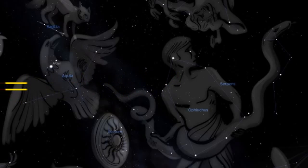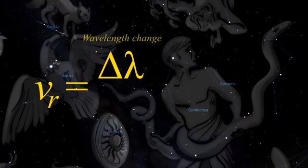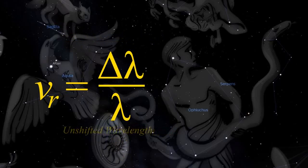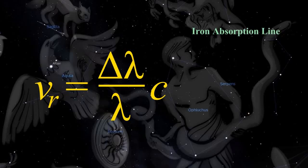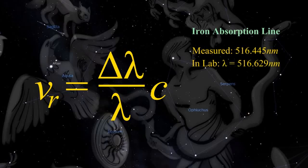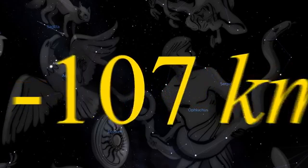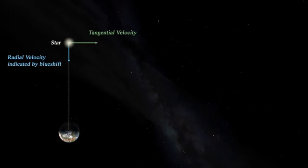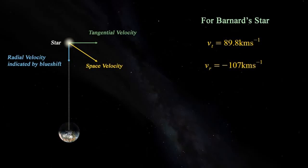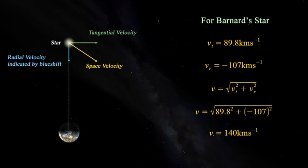To calculate radial velocity, we take the change in wavelength of an absorption line over its known laboratory wavelength where there is no Doppler shift, and multiply by the speed of light. A spectral line of iron measured in light from Barnard's star has a wavelength of 516.445 nanometers; the same line on Earth has a wavelength of 516.629 nanometers. Plugging in these numbers gives a radial velocity of minus 107 kilometres per second. The negative sign indicates blueshift — the star is moving towards us. Combining tangential and radial velocities using Pythagoras gives the space velocity of Barnard's star: 140 kilometres per second relative to the sun.